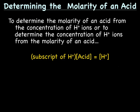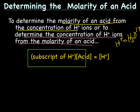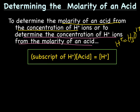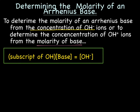Let's now talk about how to determine the molarity of an acid. To determine the molarity of an acid from the concentration of H⁺ ions — remember H⁺ is the same as H₃O⁺ — or to determine the concentration of H⁺ ions from the molarity of an acid, you're going to use this equation: the subscript of H in the acid times the concentration of the acid equals the concentration of H⁺ or H₃O⁺. To determine the molarity of an Arrhenius base, one that ends with OH, you use a very similar equation: the subscript of OH times the concentration of the base equals the concentration of OH⁻.